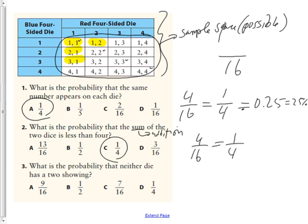And the last question says, what's the probability that neither dice has a 2 showing? So if I take my red marker, and no 2 showing, circle the ones that don't have a 2 showing. These are all the ones that don't have a 2 showing. The rest all have 2 showing. So that is 9 out of 16, which means A is my answer for that one.